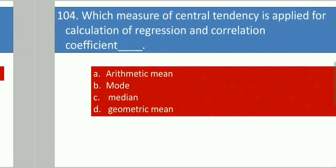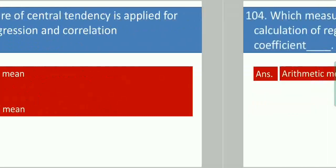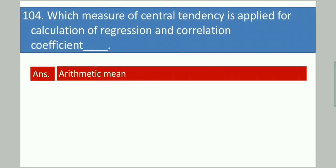Next question: Which measure of central tendency is applied for calculation of regression and correlation coefficient? Your options are: arithmetic mean, mode, median, geometric mean. Your answer is arithmetic mean.